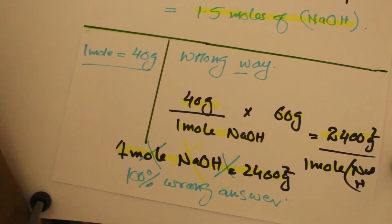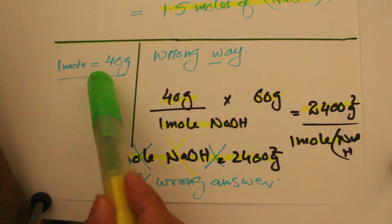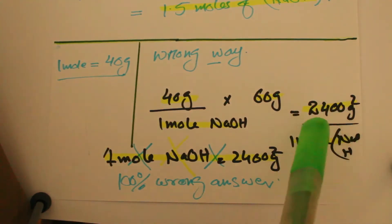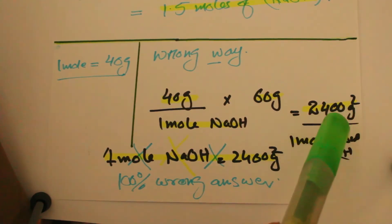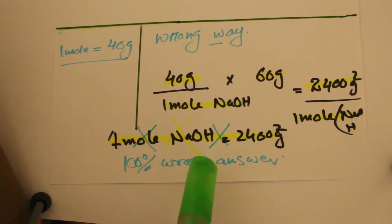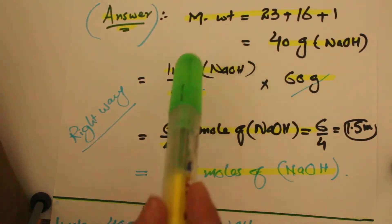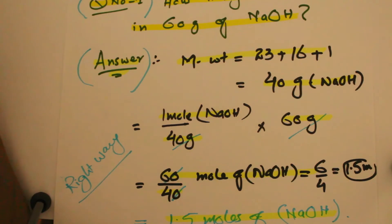This is completely insane and doesn't make any sense, because 1 mole of sodium hydroxide is equal to 40 grams — it will never equal 2400 grams squared. This is the 100% wrong way to solve the question. Whenever you solve these kinds of questions, you have to always set up the right conversion factor to cancel out the unnecessary units and remain only with the necessary units.